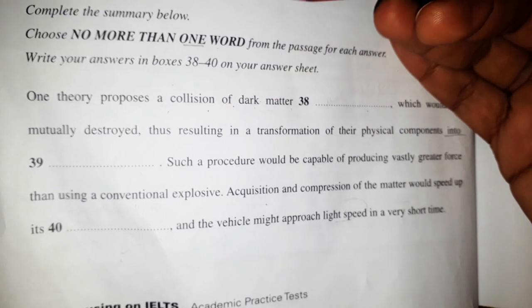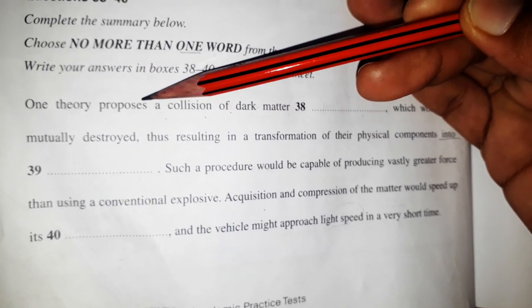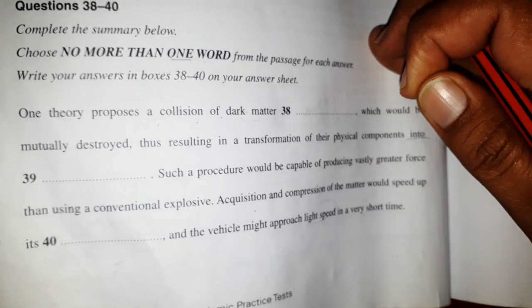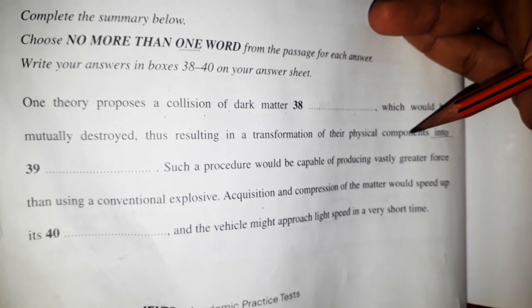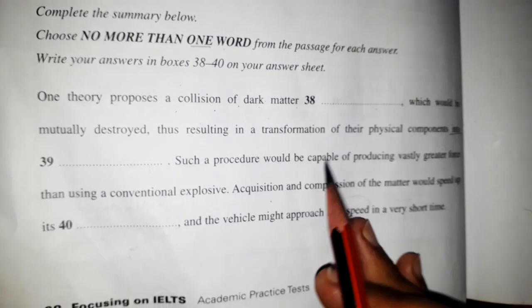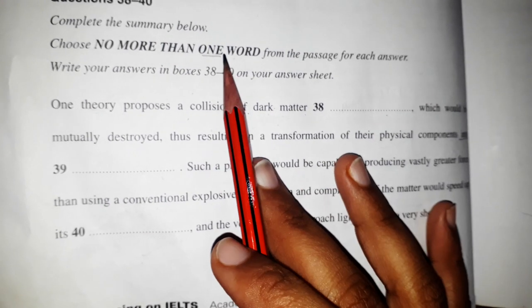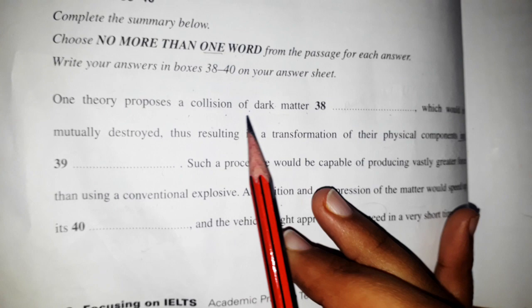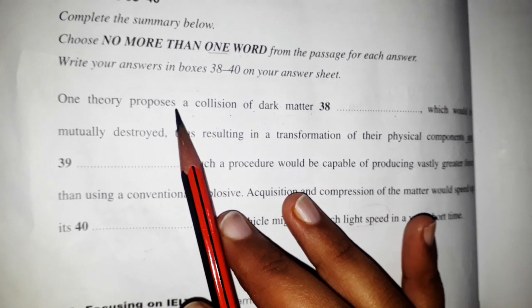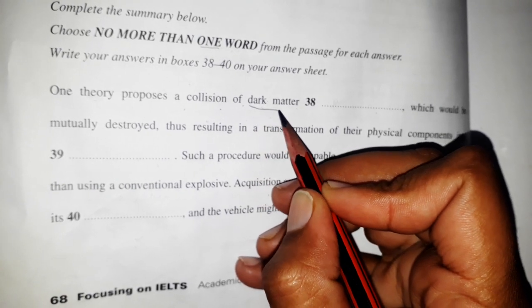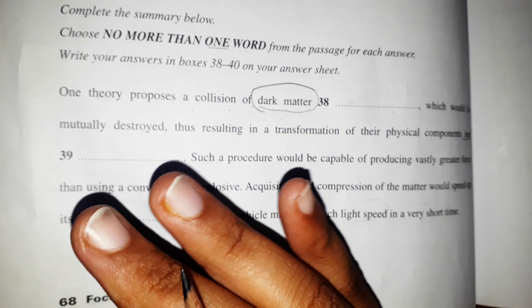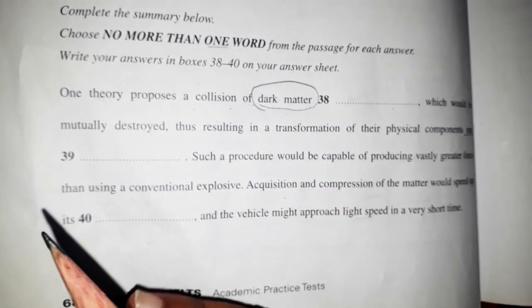So just starting our questions. One theory proposes a collision of dark matter which would be mutually destroyed, thus resulting in a transformation of their physical components. This is the first fill in the blanks. We have to write just only one word, so you should read the instructions first, then go for your question. Now what we get: one theory proposes a collision of dark matter. So we get a keyword - dark matter. This is a keyword for us. You can also see collision in your reading test.